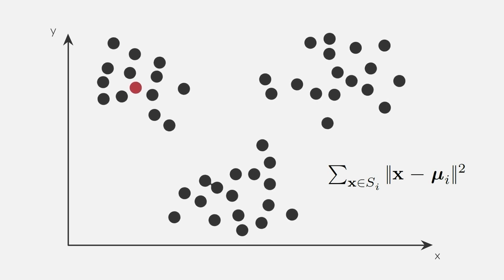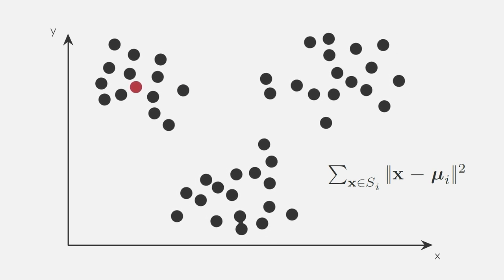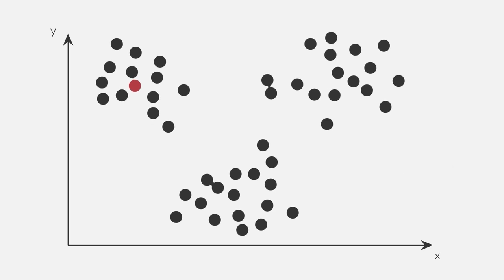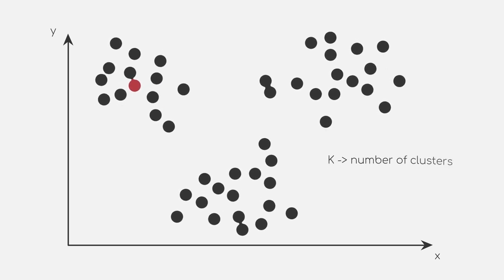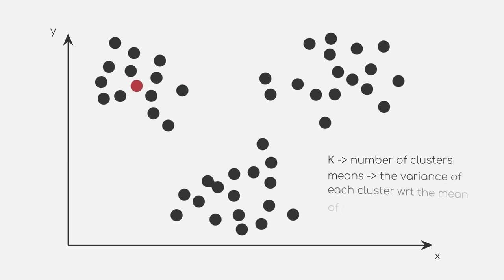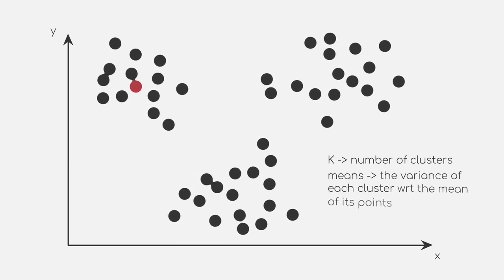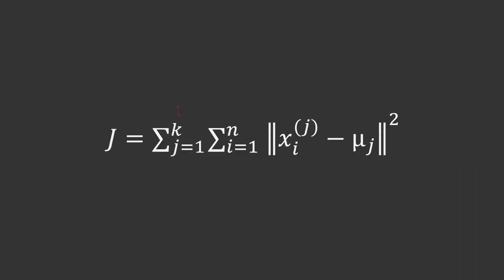With this concept of a center point and the variance, you might already have an idea of why the algorithm is called K-means. K refers to the number of clusters and means refers to the fact that we measure the variance of each cluster with respect to the mean of its points. Since we have K different clusters, we will just sum up all K variances and try to minimize this sum as part of our objective function.